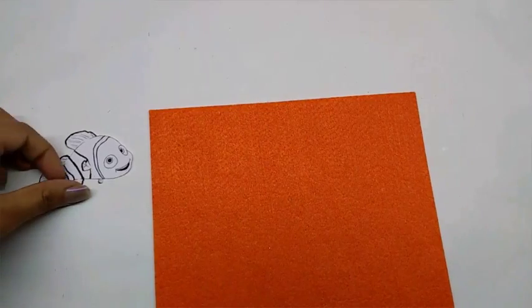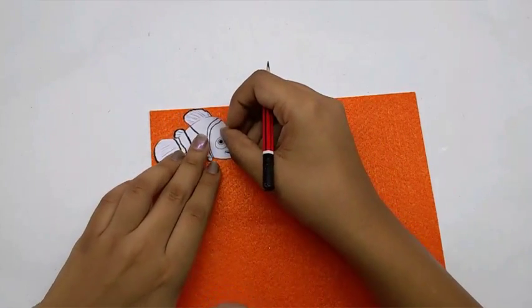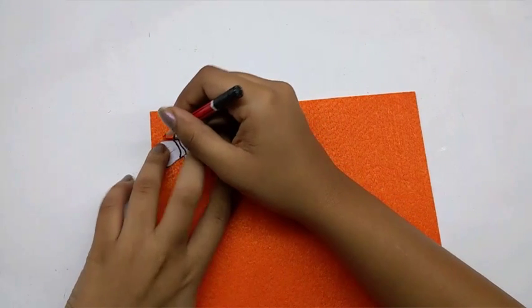I am making Nemo just now. So I have taken the printout and I am going to trace it on the felt sheet and then cut it out.